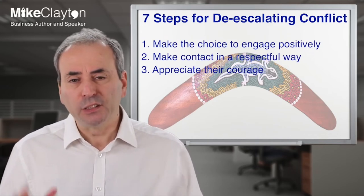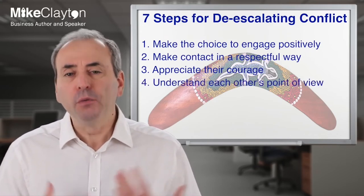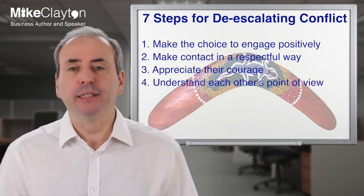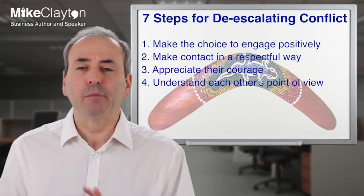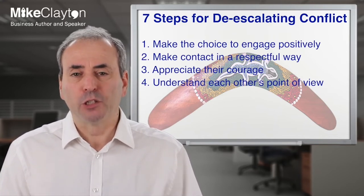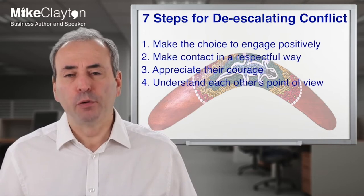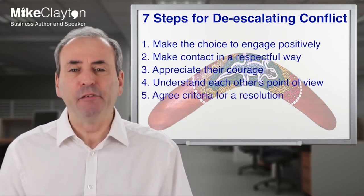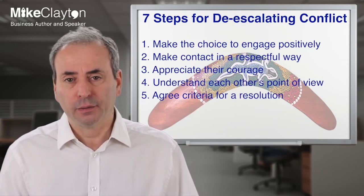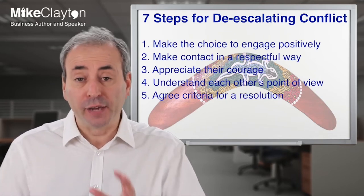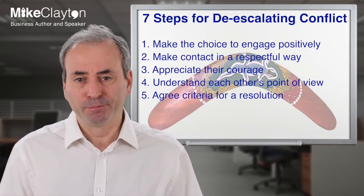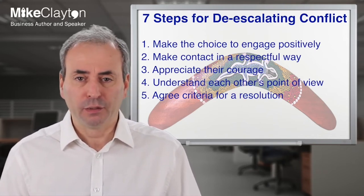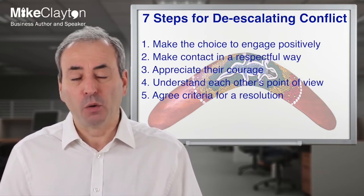You need to build rapport, so the third step is to appreciate the courage the other person is showing in likewise choosing to engage with you. Listen to them, demonstrate empathy for their situation, and try hard to understand it. Step four is where you both need to understand each other's point of view — take turns sharing your perceptions of what's going on, what went wrong, and what good outcomes might be, and listen to each other. The more you understand about each other, the better your chances of ultimately resolving the conflict.